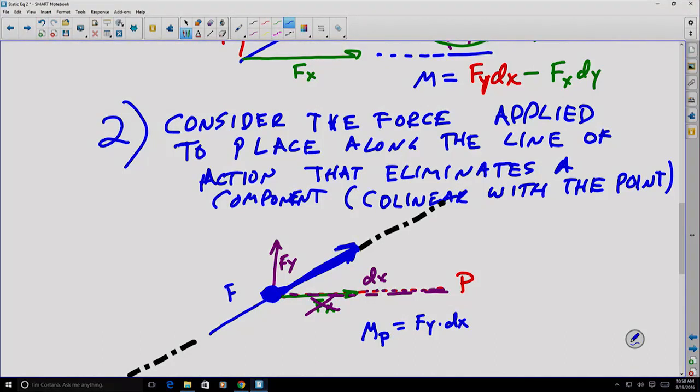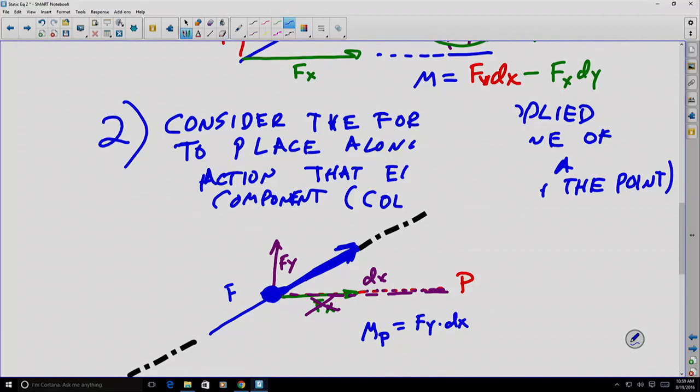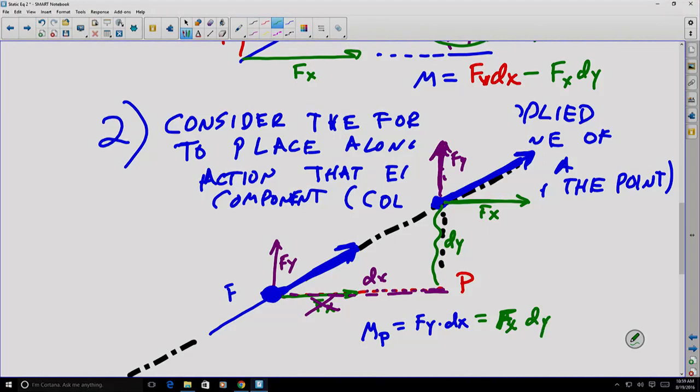We could do the same thing by applying the point directly above this point P. If we stay on that line of action and consider the forces being applied directly above here, well, now, the Y component is now meaningless. It gets eliminated because it has no moment arm and the X component is the only one that counts. So here's FX and if we call this distance some dy, we can show that the moment in that case is equal to FX times that distance Y because the other components have been eliminated.